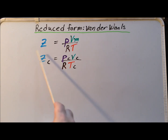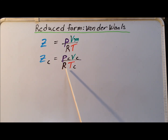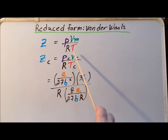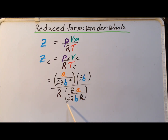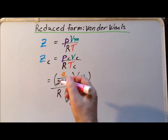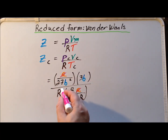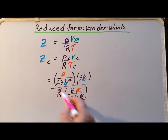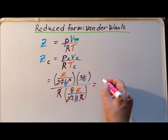In equation form, the critical compression factor z sub c equals p sub c times v sub c divided by R times t sub c. To solve, we substitute the appropriate values: p sub c is a over 27b squared, v sub c is 3b, R is R, and t sub c is 8a over 27bR. We notice a number of simplifications: the a's cancel, R cancels R, and b, b, and b squared cancel each other, as do the 27s. So we are left with simply 3 over 8.